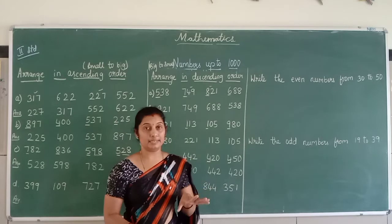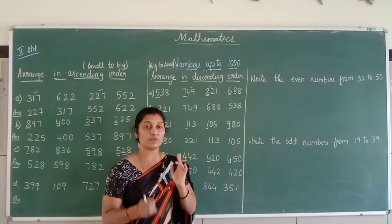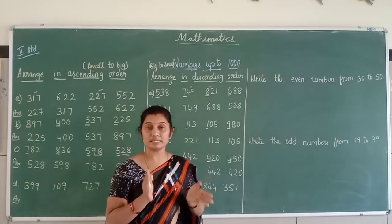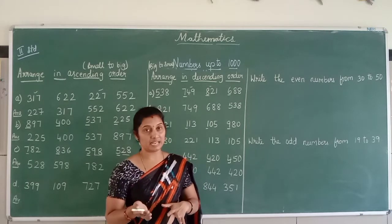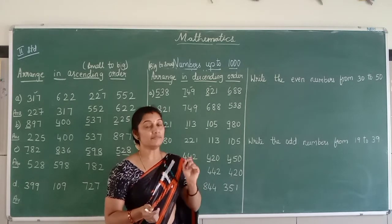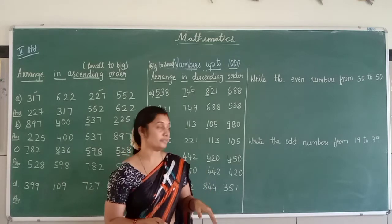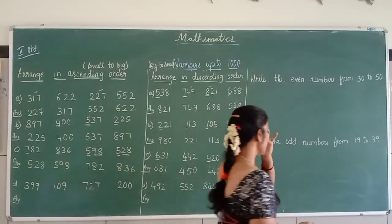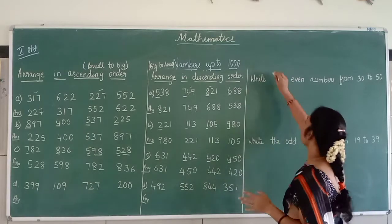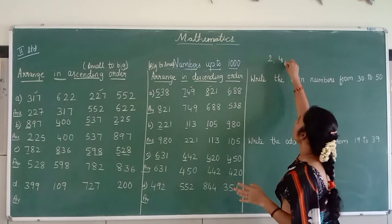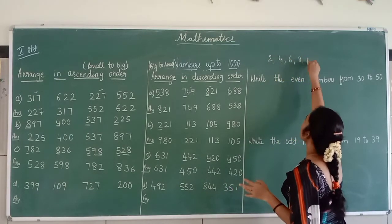See, when you wear your earrings also, it should be same. When you are wearing two earrings, it should be same. One will be different and another will be different, it will be like a no. So even number is a pairing number whereas odd number is an unpaired number.